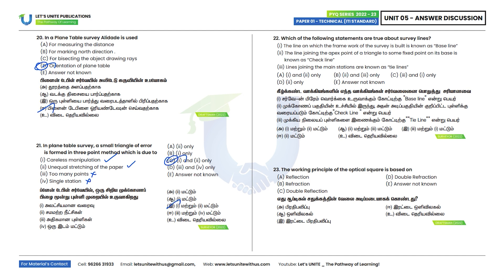Twenty-second question: Which of the following statements are true about survey lines? The line on which the framework of survey is built is known as the baseline — correct. The line joining the apex point of a triangle to a fixed point on its base is called the check line — correct. The line joining the main stations is known as tie lines, not chain lines. So options 1 and 2 only are correct. Option A is the correct answer.